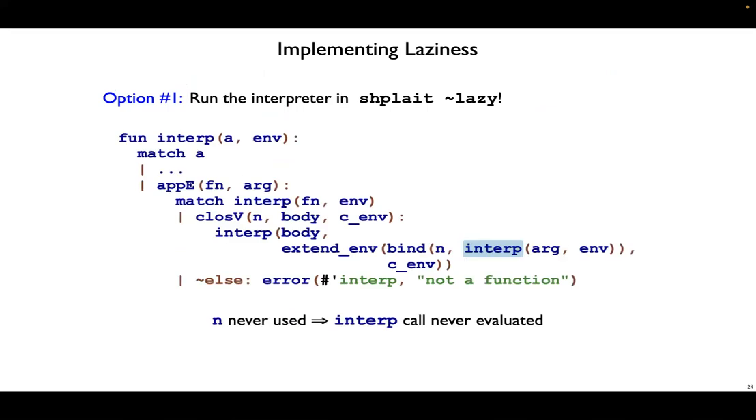We know that the test would pass if we just ran the interpreter in shplait lazy, but that's not what we want to do. We want to implement laziness directly. But it's useful to see why it works with shplait lazy. That's because in the application case, when we go to extend the environment, we have this call to interpret the argument.